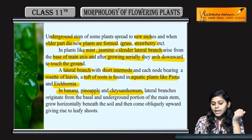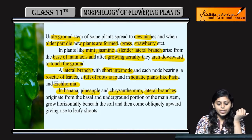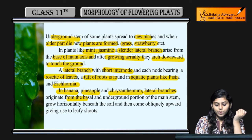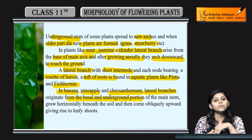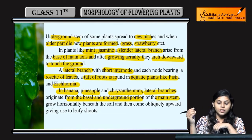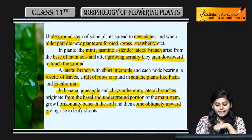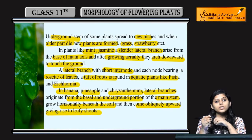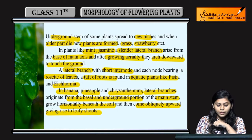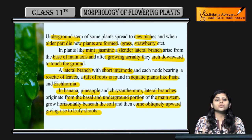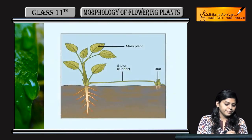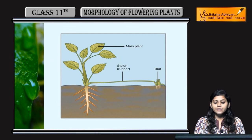In banana, pineapple, chrysanthemum - lateral branches originate hoti hain from the basal and underground portion of the main stem. Yahan horizontally grow kerti hain beneath the soil and come obliquely upward. Horizontal grow kerti hain soil mein, or obliquely upward hoti hain taaki woh leafy shoots ko grow kar saken.